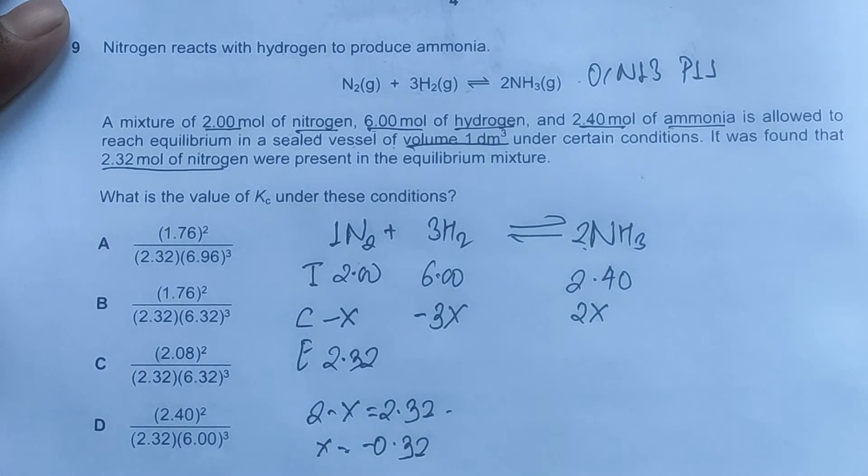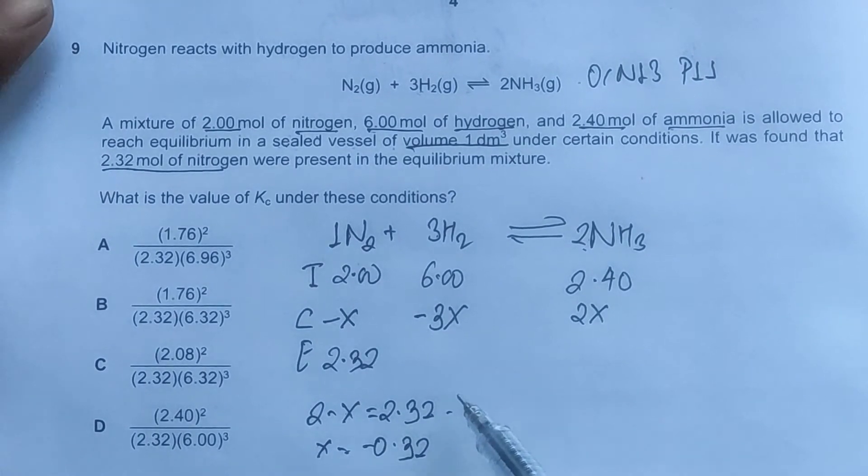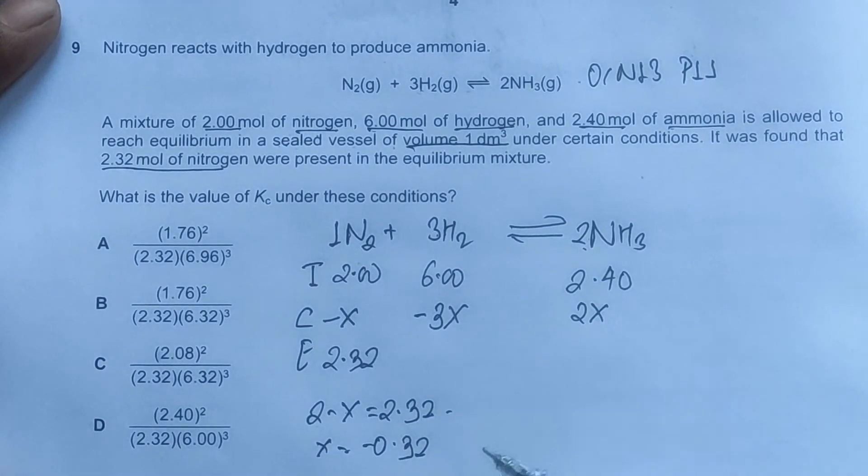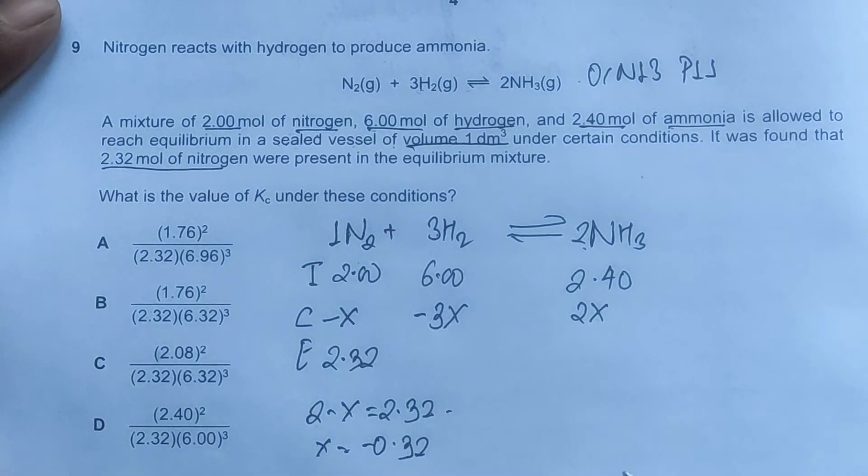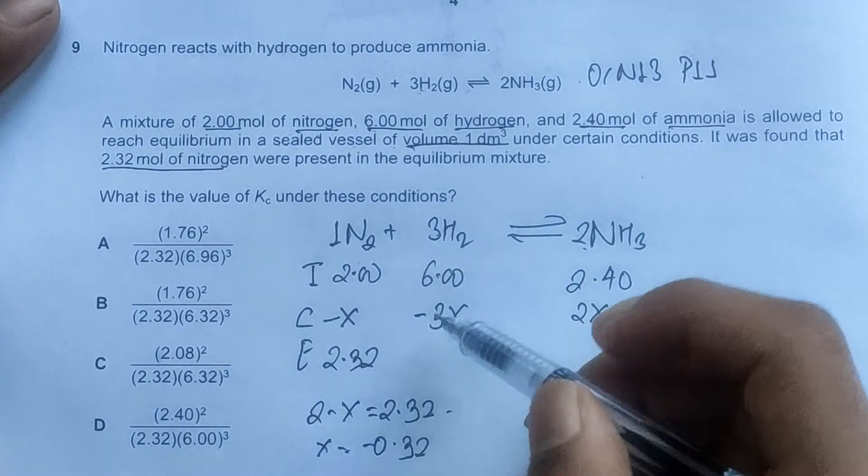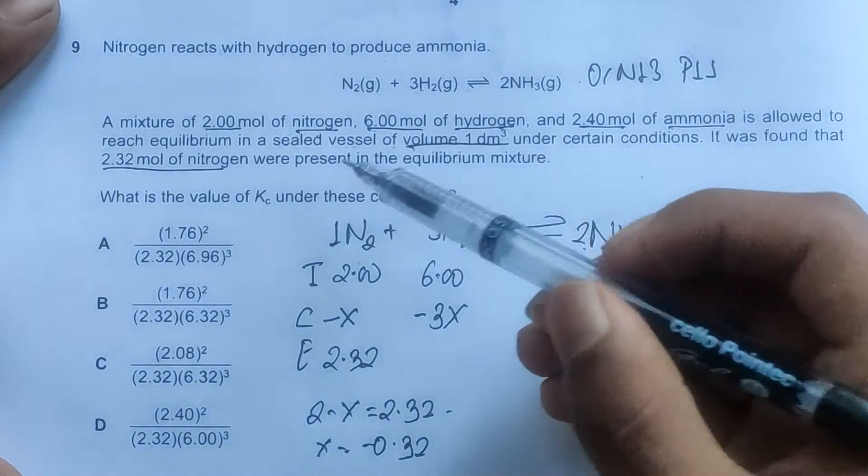The value of X is negative 0.32. Later on we'll analyze if the values we have got are actually sensible or not. We'll find out what's the value of Kc. Looking at the options, we have 2.32 moles of nitrogen, and all the expressions are correct.